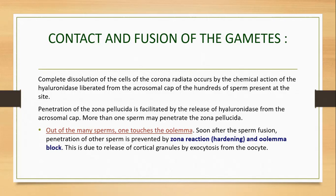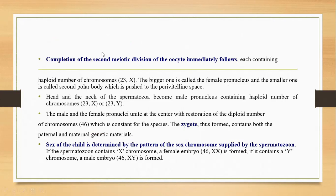Immediately after sperm fusion, there is completion of the second meiotic division of the oocyte, each cell containing a haploid number of chromosomes. The bigger one becomes the female pronucleus and the other becomes a polar body, which is pushed back to the perivitelline space and then degenerates. The female pronucleus remains in the oocyte.